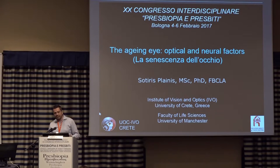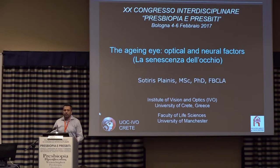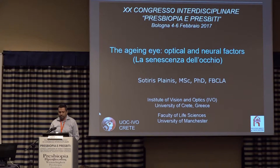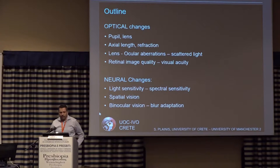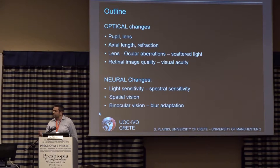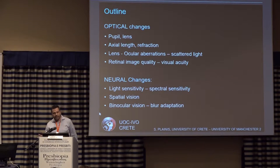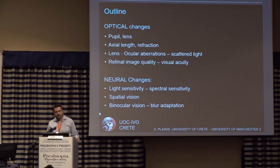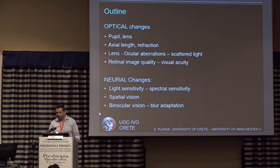Today I will discuss the aging eye and the normal, healthy eye, and how its performance may be limited due to optical and neural factors. I will talk about the pupil and the lens — there are not many changes in the cornea — then about refraction, scattered light, retinal image quality and visual acuity. I will also focus on light sensitivity, spectral sensitivity, spatial vision, and binocular vision.